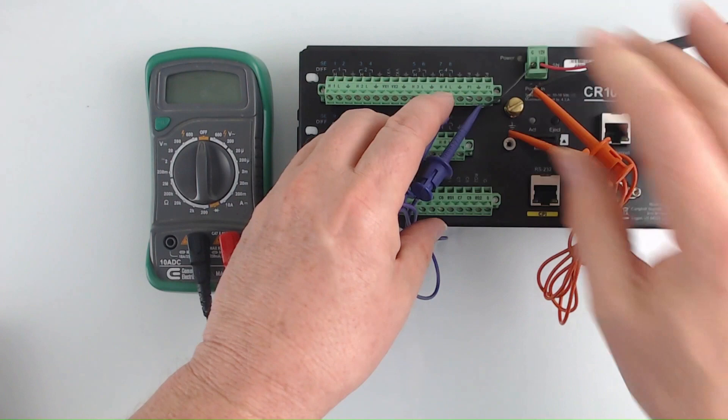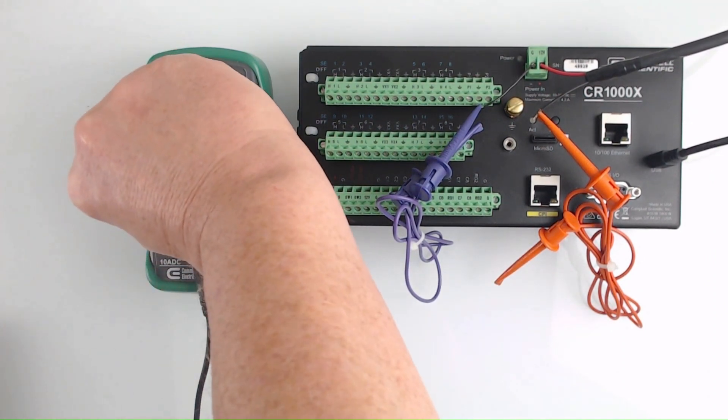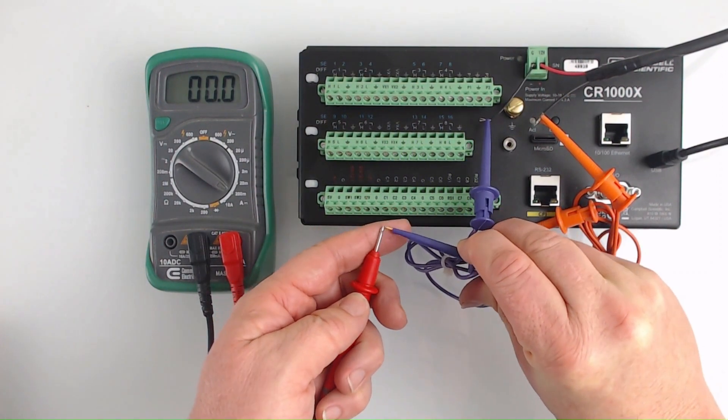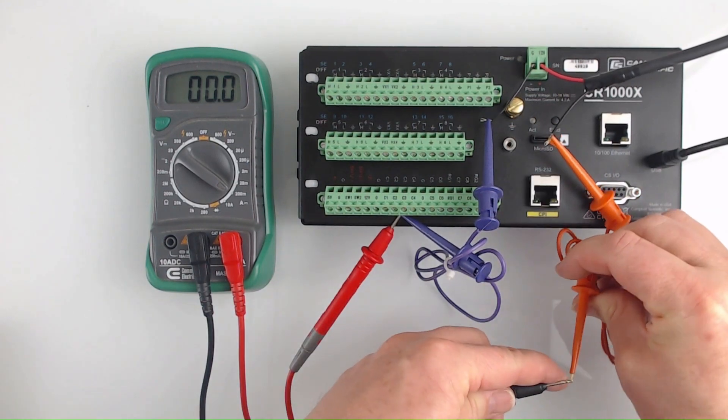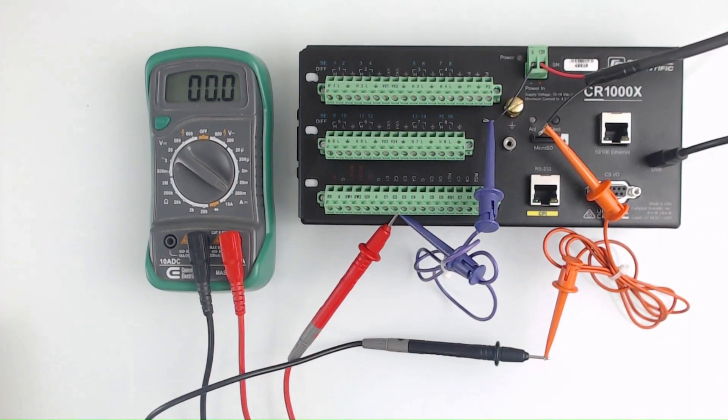Now I'm ready to insert the multimeter into the break and measure the current drain. I set the multimeter to the 200 milliamp range, which is the highest range for this input jack. Next, I connect the test clip on the jumper wire to the positive probe and the test clip on the original ground wire to the negative probe. I turn the power supply back on and wait for the CR 1000 X to go through its startup routine.